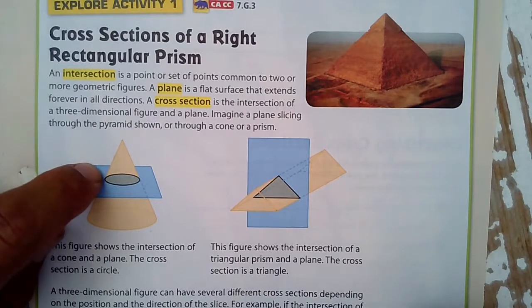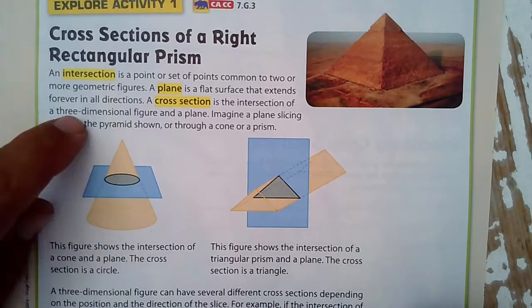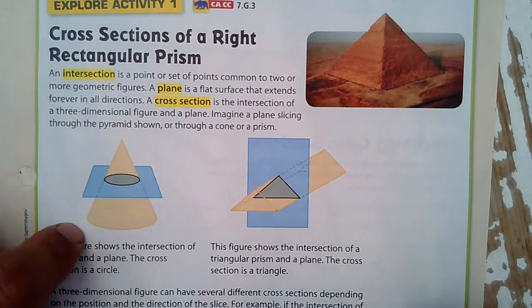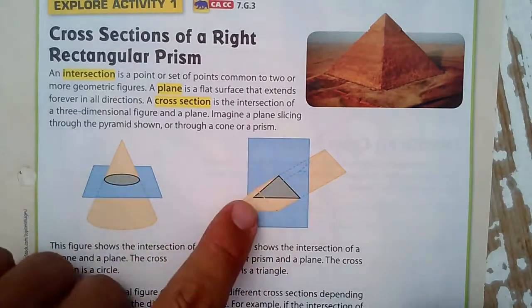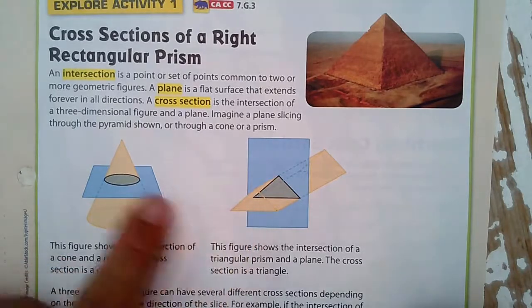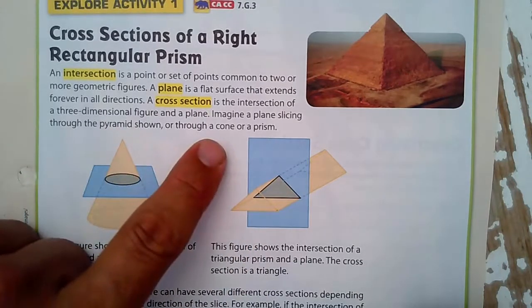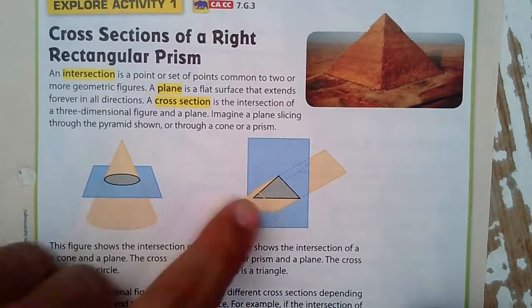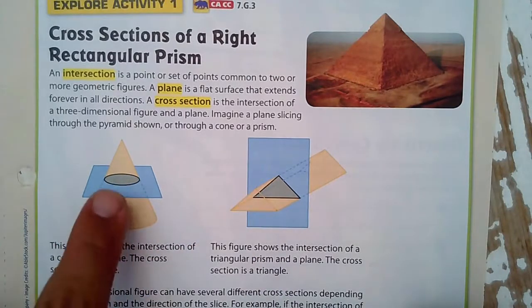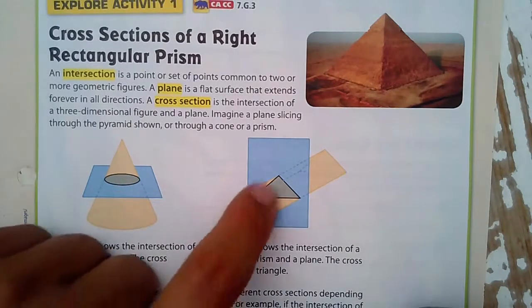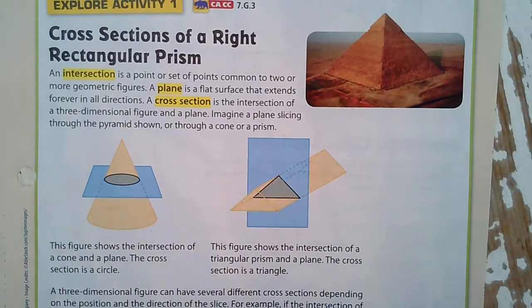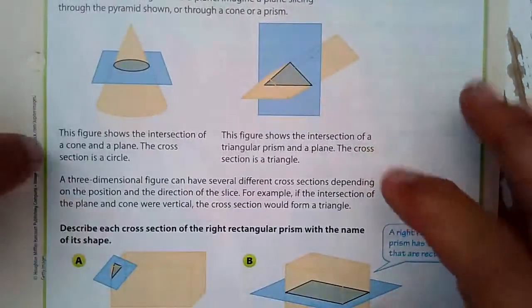And the intersection is said to be that circle. That's where the slice meets the cone. And then the cross-section is the intersection of the three-dimensional figure. This cone is a three-dimensional figure, and this triangular prism is the three-dimensional figure.